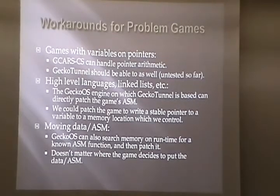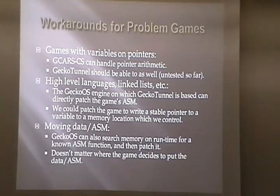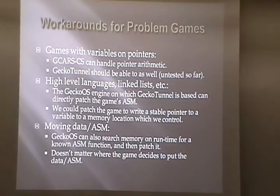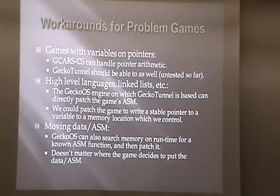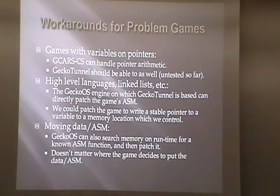There are workarounds for those. If a variable is behind a pointer, GCarCS can handle pointer arithmetic, so we can find variables by following a pointer — and we think GeckoTunnel can do that too. If we find a linked list or some weird data structure, the GeckoOS engine on which we base GeckoTunnel can directly patch the game assembly. So we can find a piece of code in the game that knows where that variable is at any time, patch it to write a pointer to a stable location we can read. And if the data and assembly are moving around, we can search memory at runtime for the assembly function and then patch that.